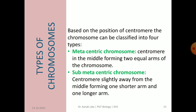In a metacentric chromosome, the centromere is present in the middle of the chromosome, and the two arms are almost equal in length. In a submetacentric chromosome, the centromere is slightly away from the middle point, so one arm is slightly shorter and the other arm is slightly longer.